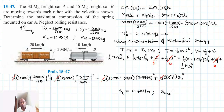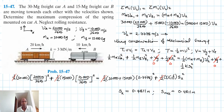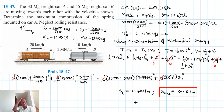Therefore, s_max is equal to 0.4811 meters. We have calculated the maximum compression of the spring. I hope this video was helpful — if it was, give it a thumbs up, continue subscribing and sharing my channel. Bye bye and see you in my next screencast.